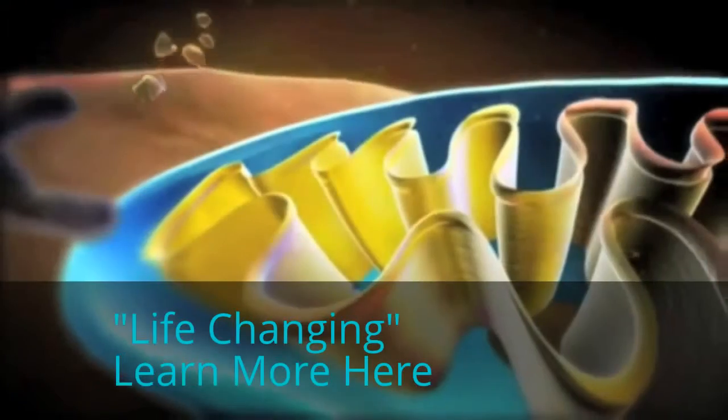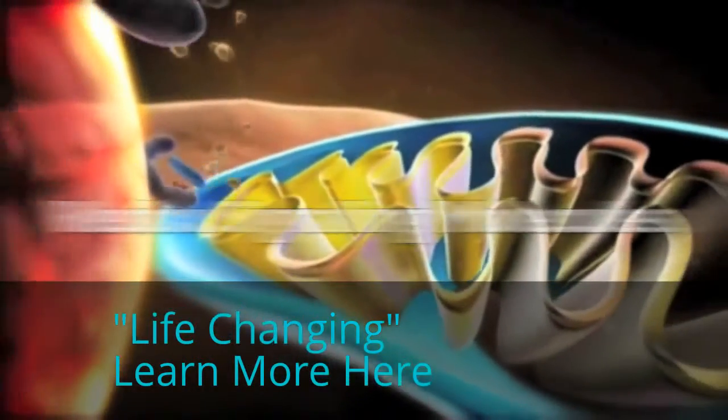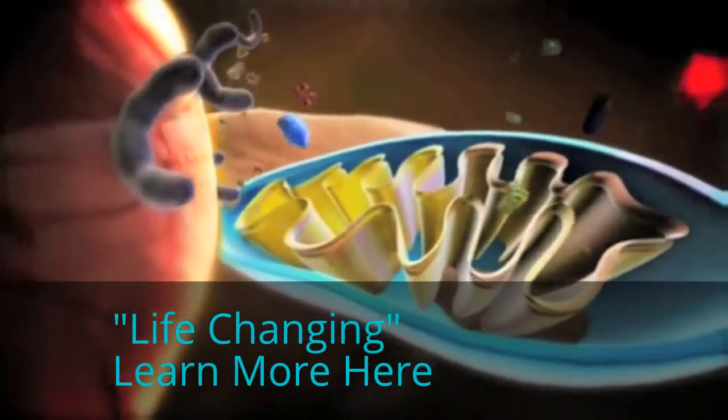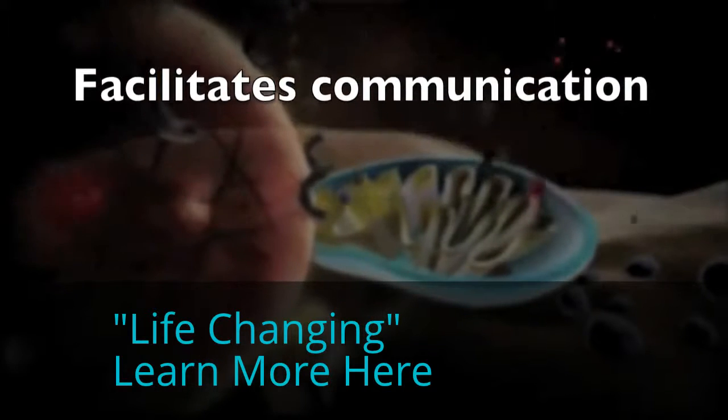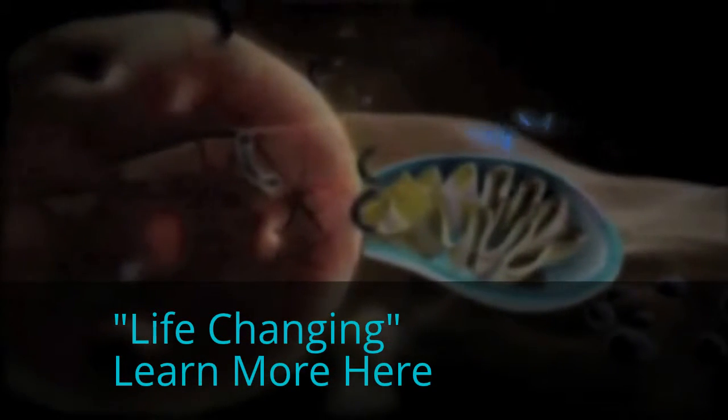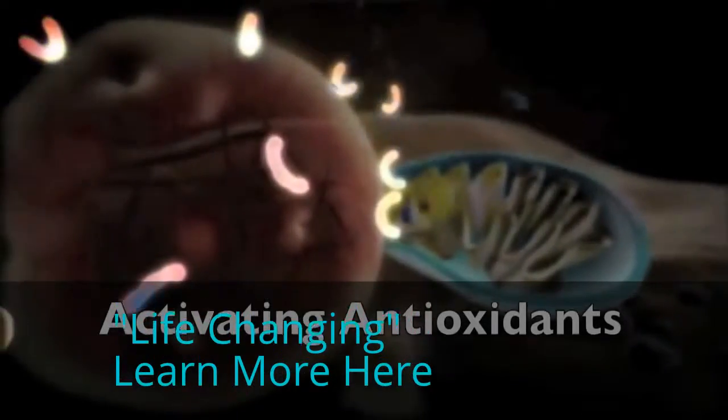Scientists have discovered that two sets of reactive molecules found naturally in cells are critical for immune function. One set fortifies the immune system and facilitates communication within and between cells. The other set performs the critical functions of protecting the cell and activating antioxidants.